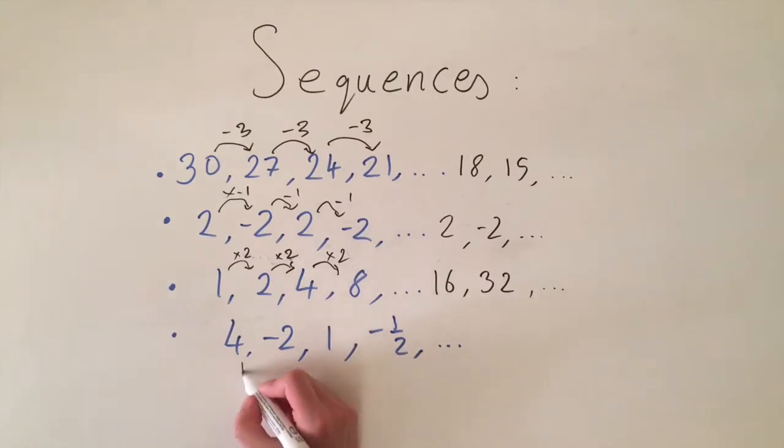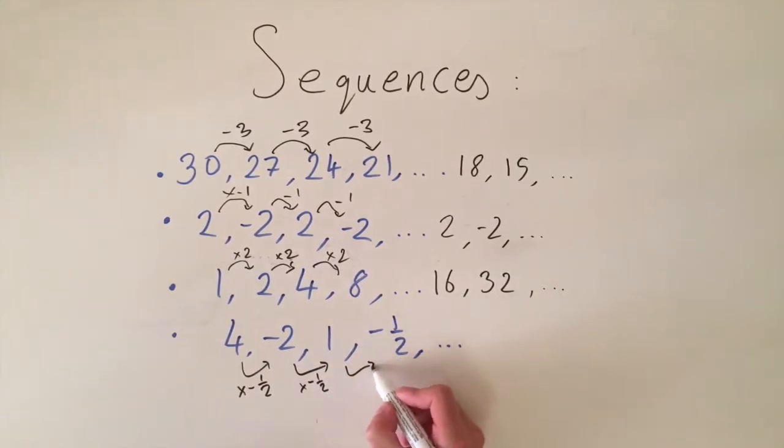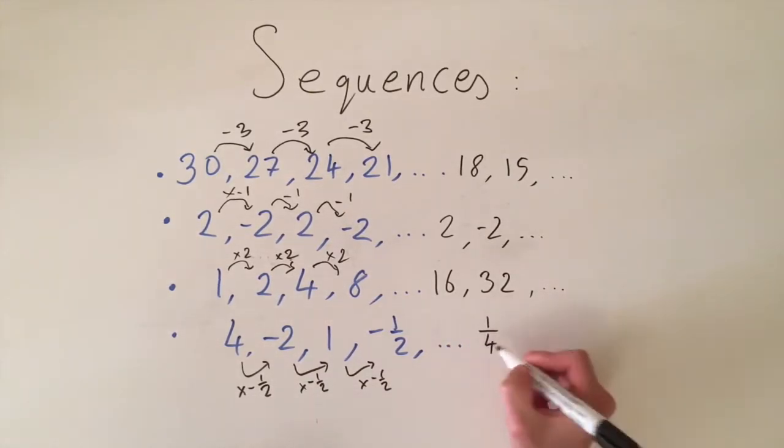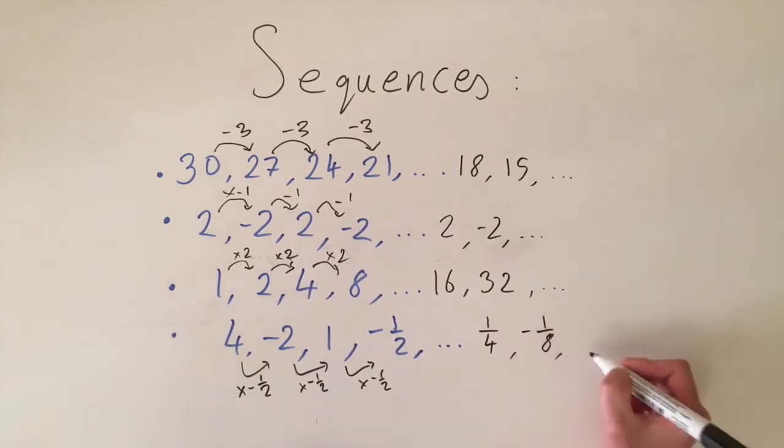So what we're actually doing is we are dividing by 2 and multiplying by minus 1 at the same time. So we can represent this as multiplying by -1/2. So 4 times -1/2 gives us -2 and -2 times -1/2 gives us 1 and then the same thing gives us -1/2. So this is the rule to generate the whole sequence and we can work out next few terms, a quarter, minus an eighth and etc.